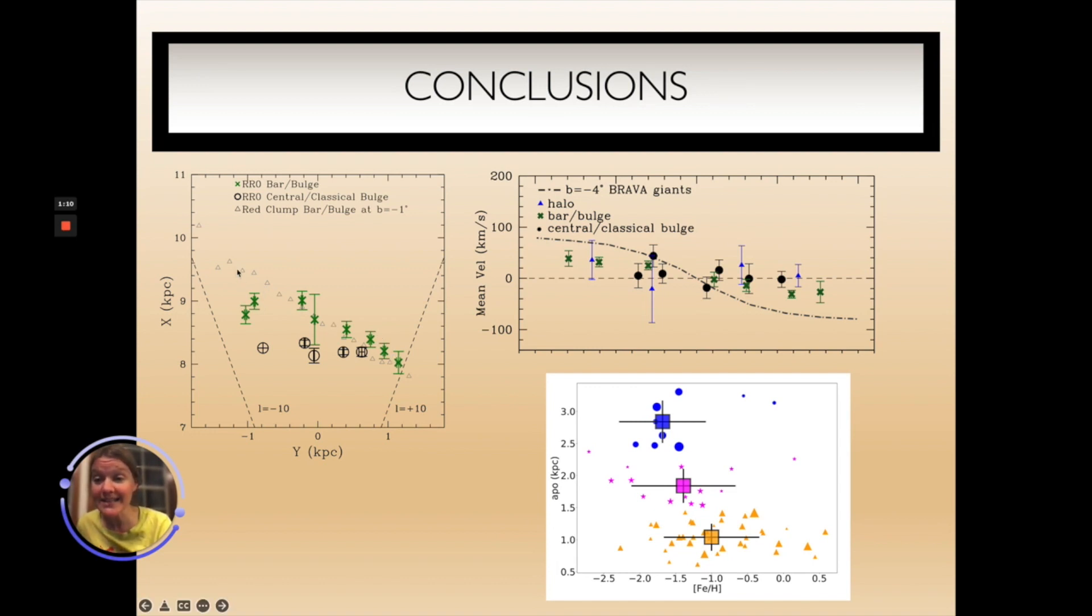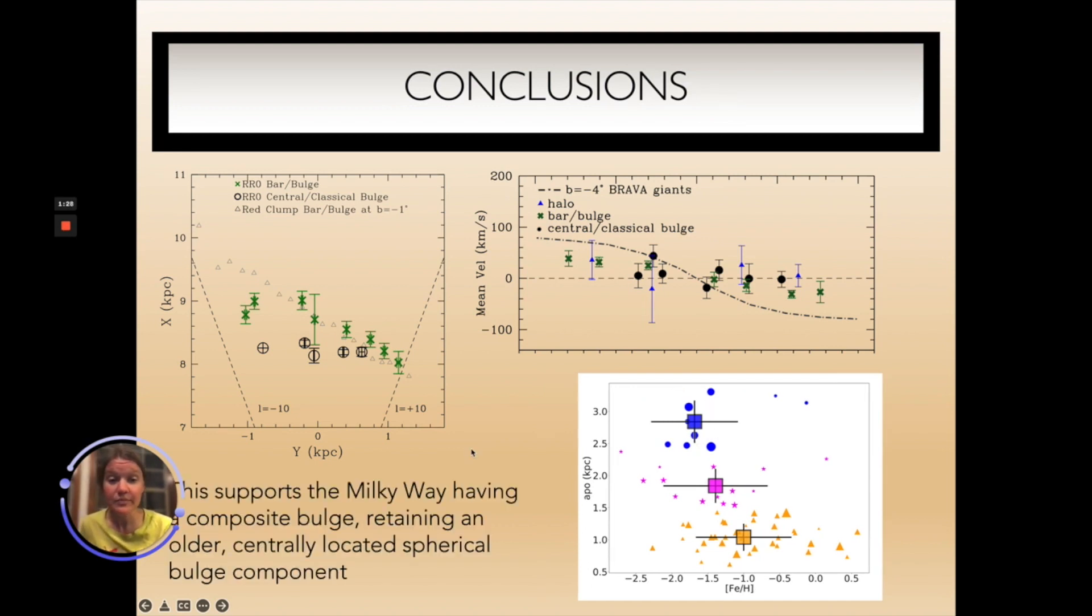The RR Lyrae stars not as centrally concentrated have similar characteristics to the bulge bar. They trace the bar in a similar manner than the red clump stars do. They have a little bit of slower rotation, but still show some rotation, and they have on average slightly lower metallicities. The central most RR Lyrae stars have characteristics supporting the Milky Way having a composite bulge, retaining an older, centrally located spherical bulge component.